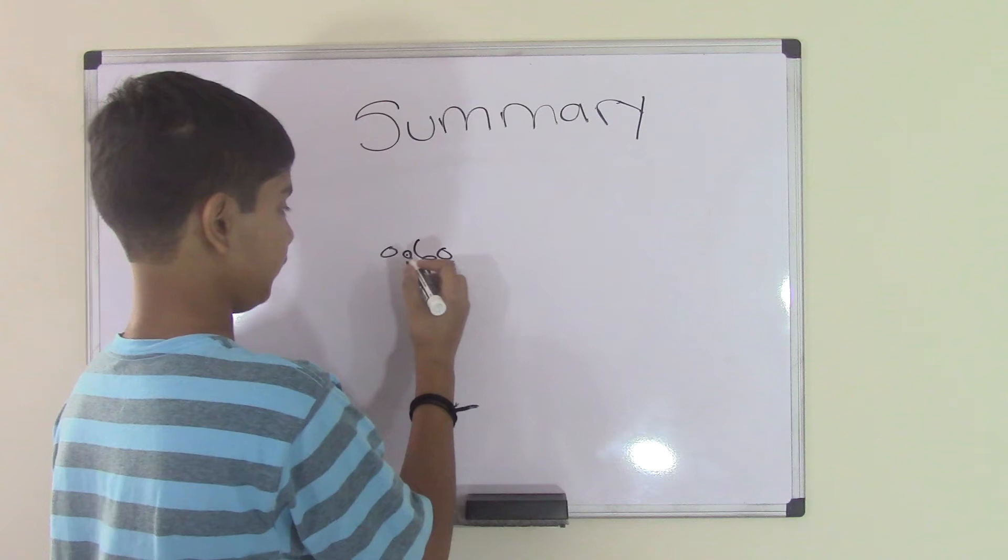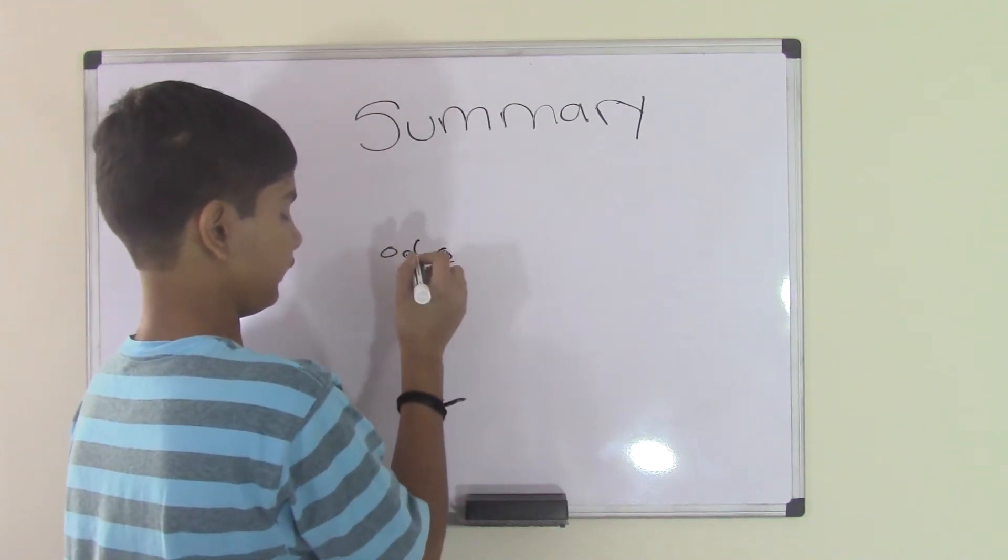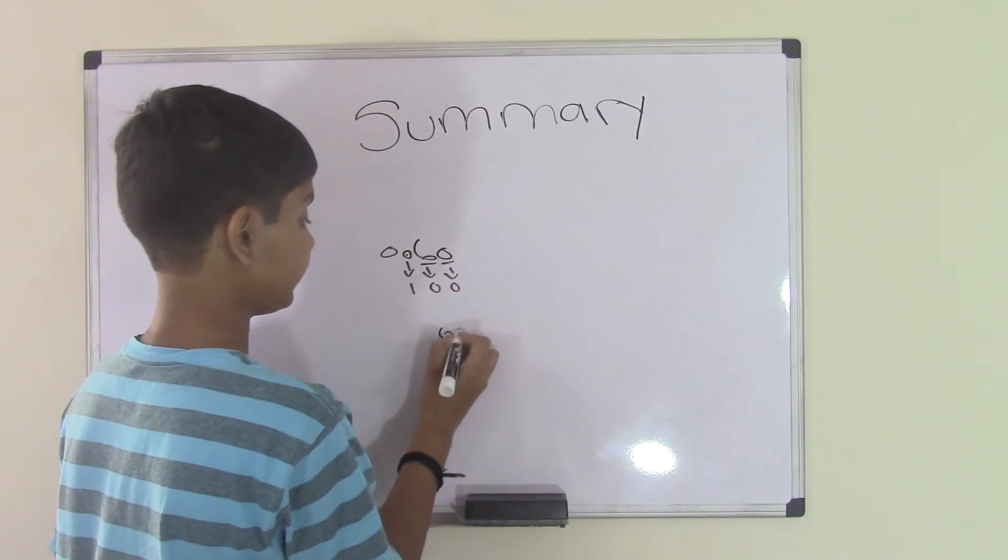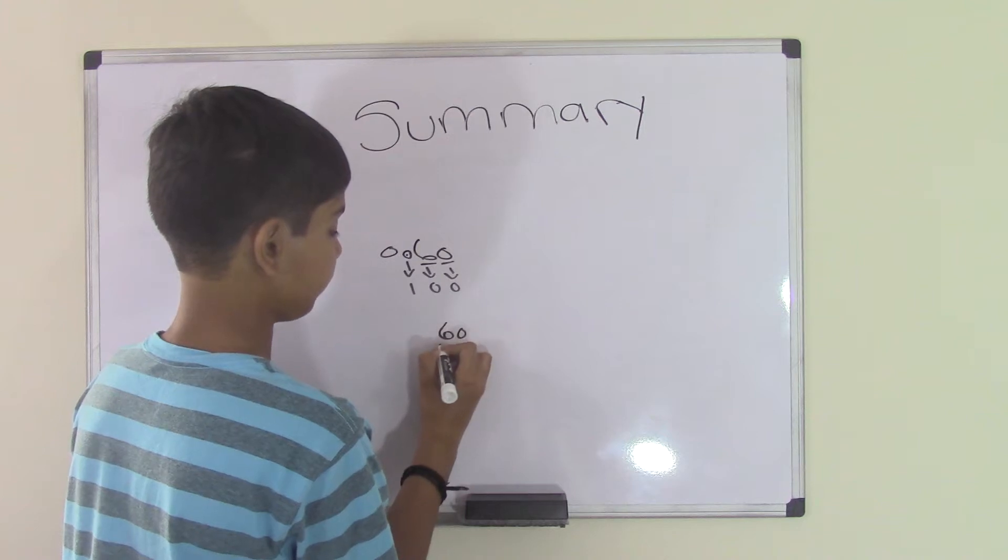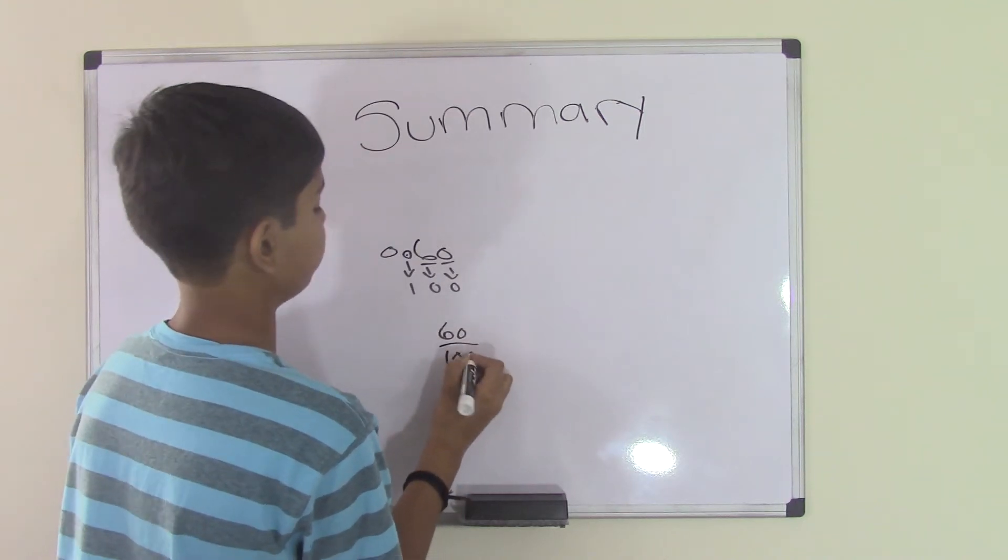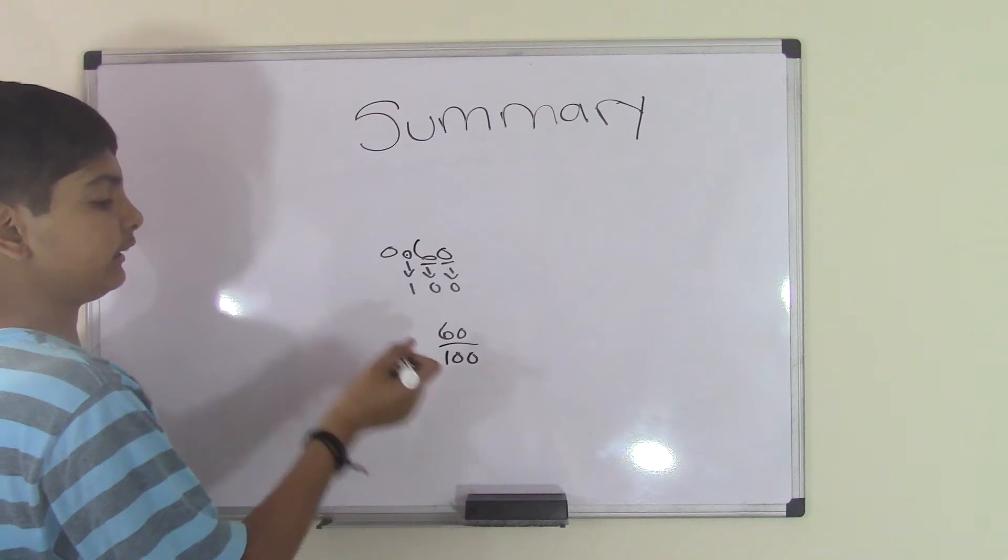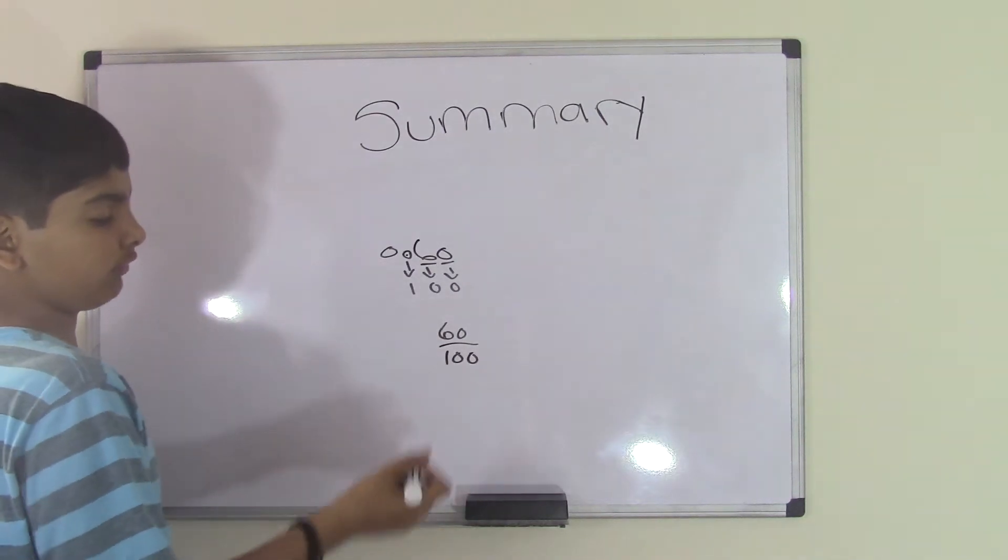Then we look at the number after the decimal point, in this case 60, write it on top, and then write the place value on the bottom, 100. We know that 0.60 is actually 60 out of hundreds.